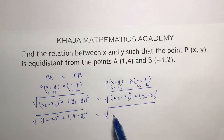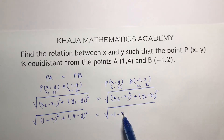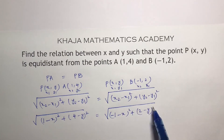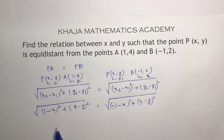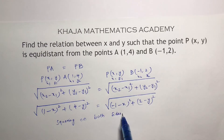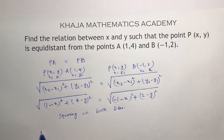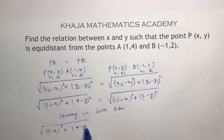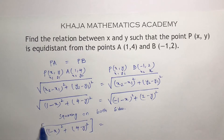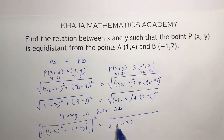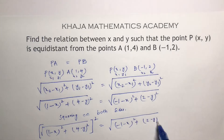On the right side: minus 1 minus X whole square and Y2 is 2 minus Y whole square. Now squaring on both sides: root of (1 minus X) whole square plus (4 minus Y) whole square equals root of (minus 1 minus X) whole square plus (2 minus Y) whole square.